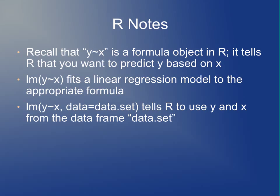In terms of how you use the command: y ~ x is a formula object in R that tells R you want to predict y based on x. If you have LM(y ~ x), that fits a linear regression model to predict y based on x. If you add 'data = dataset', that says y and x should be columns from the data frame called dataset. Of course, y and x could also just be R objects by themselves, in which case you wouldn't need the data argument.